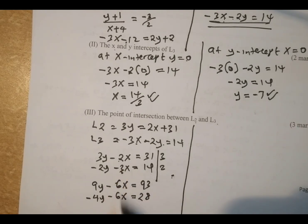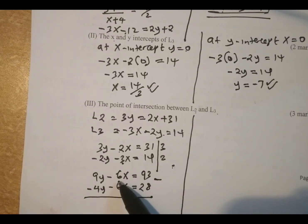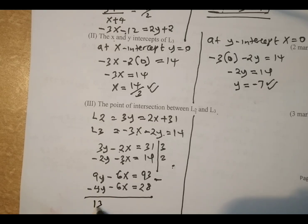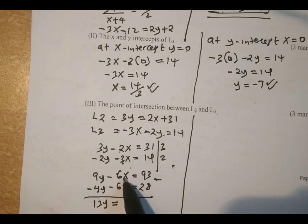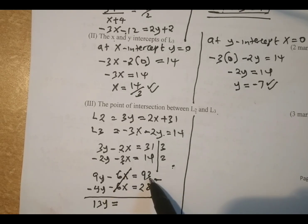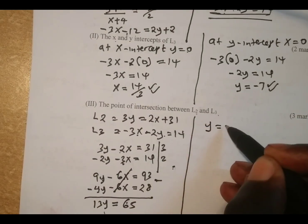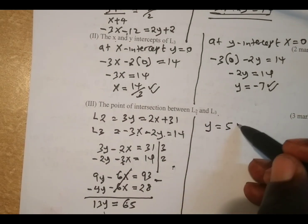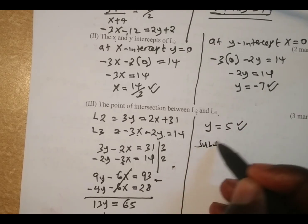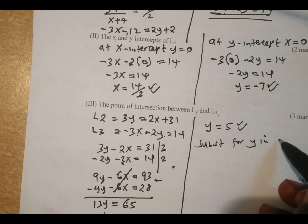Having unified the x terms, we subtract the two equations. 9y minus negative 4y gives positive 13y. The x terms cancel: negative 6x minus negative 6x equals 0. We are left with 13y equals 93 minus 28, which is 65. Dividing both sides by 13, the value of y equals 5.